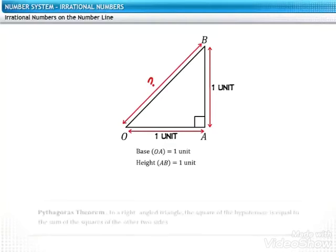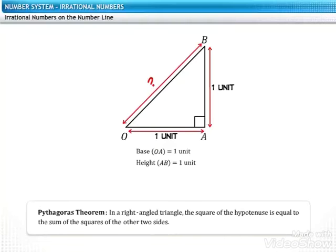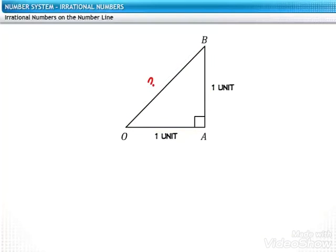Recall the Pythagoras theorem that states, in a right-angled triangle, the square of the hypotenuse is equal to the sum of the squares of the other two sides. Applying this theorem to triangle OAB, we get this equation.